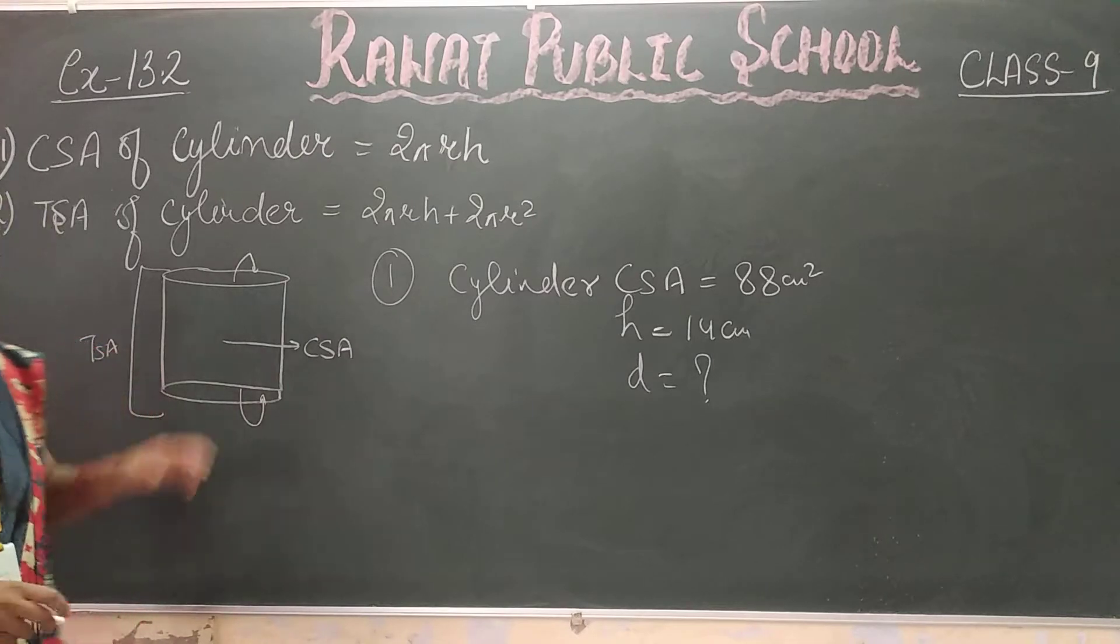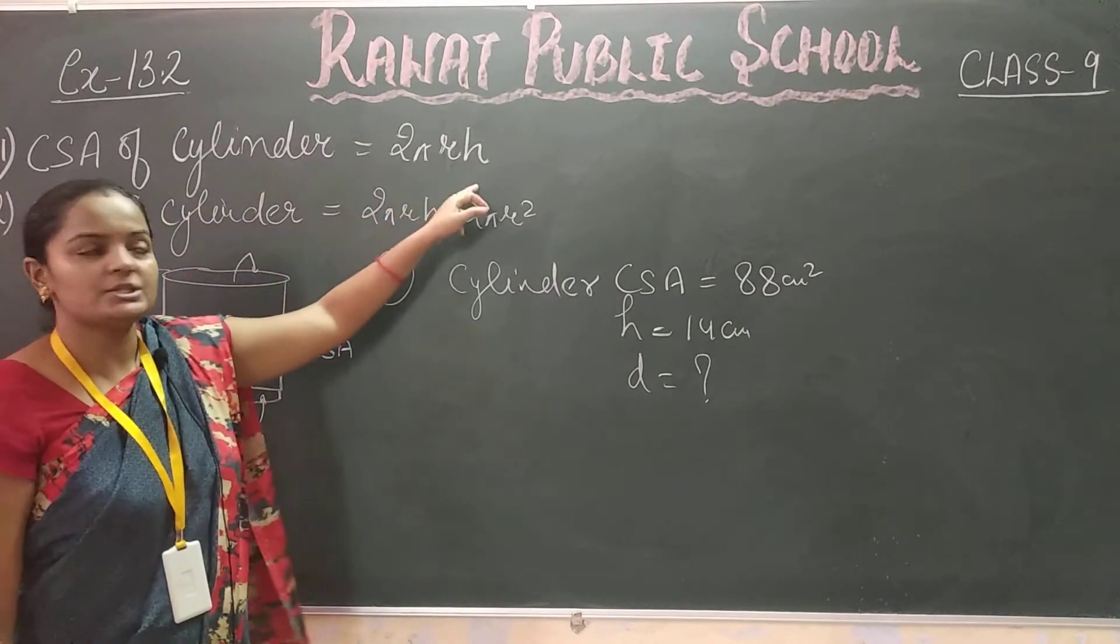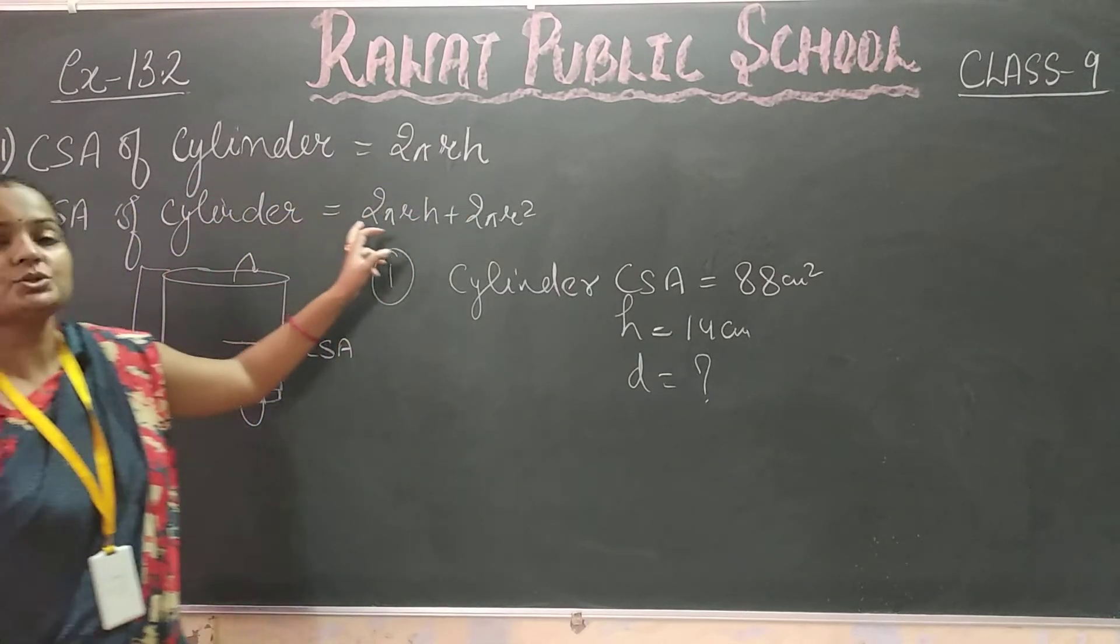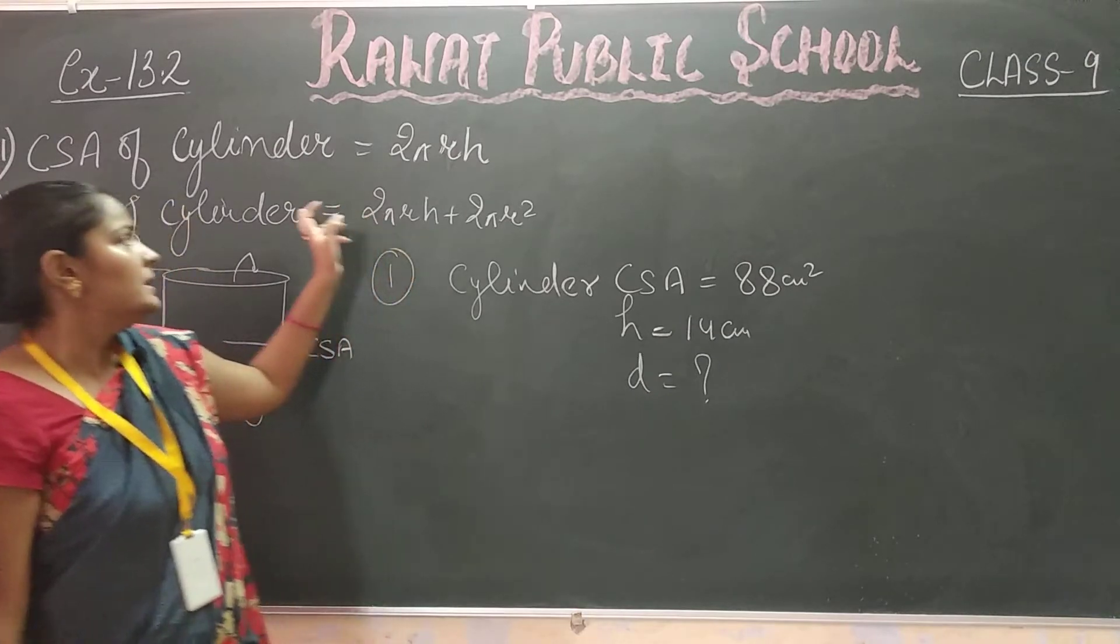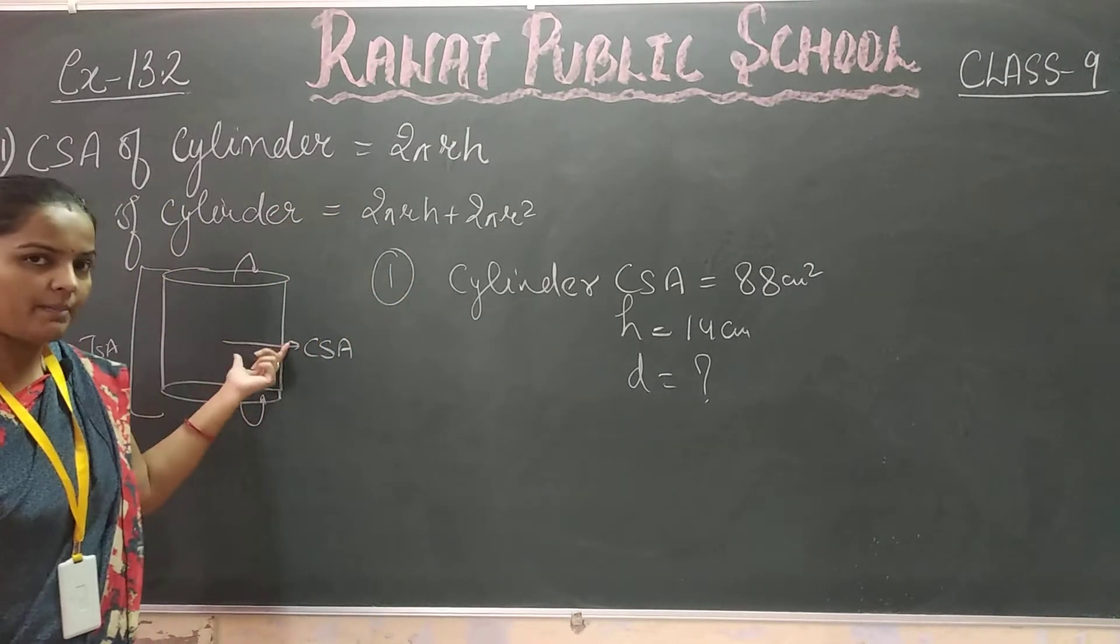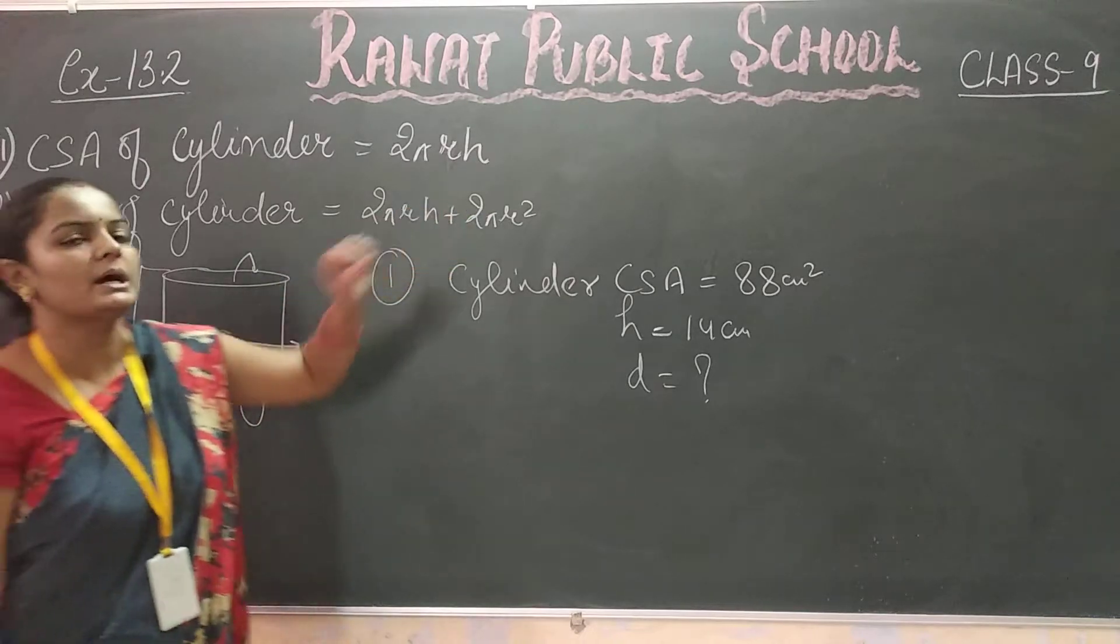Total surface area includes curved surface area. CSA is curved across. Then r squared plus r squared, which is equal to the formula.